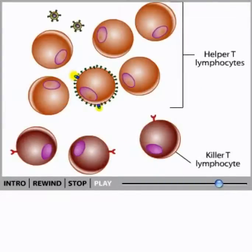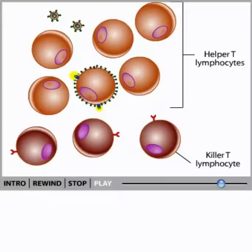Because the new mutated version of the virus is unfamiliar to the immune system, the previous army of killer T lymphocytes does not recognize the newly infected cells. The immune system has to combat this mutated version almost as if it were a new infection. Yet as time passes, the ability of the immune system to combat these new infections greatly diminishes.